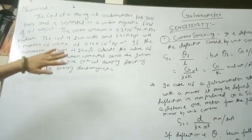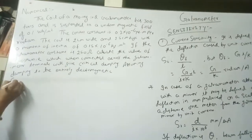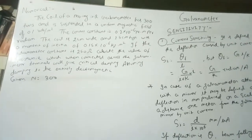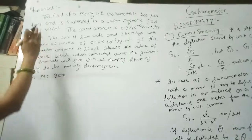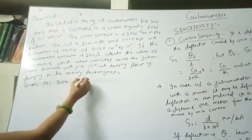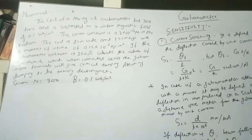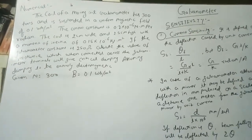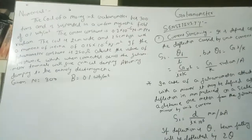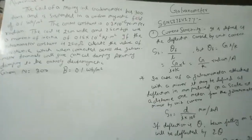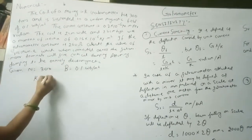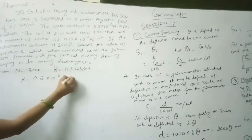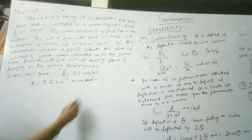The coil of a moving coil galvanometer has 300 turns. So the given value: N = 300. It is suspended in a uniform magnetic field of 0.1 Weber per meter square, that is the flux density B = 0.1 Wb/m². The control constant K = 0.2 × 10⁻⁶ Newton meter per radian.